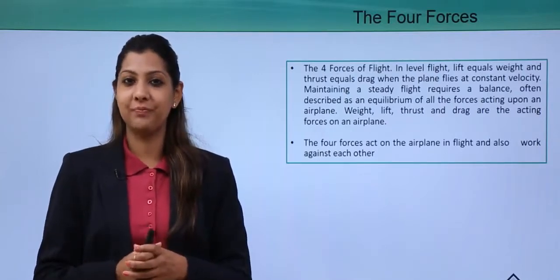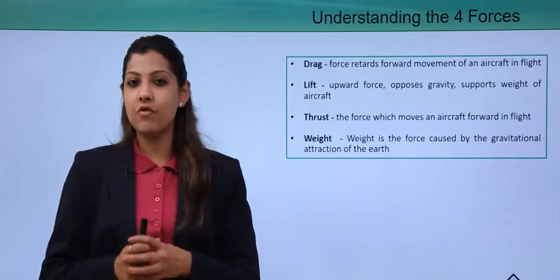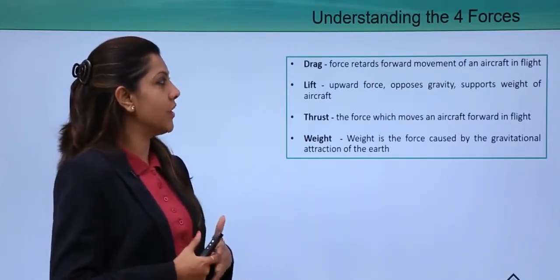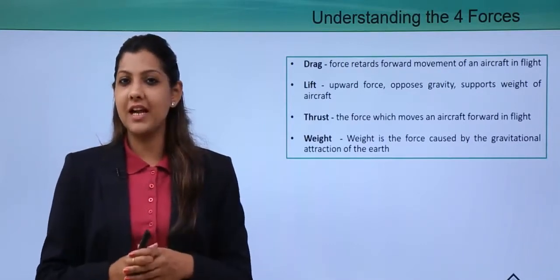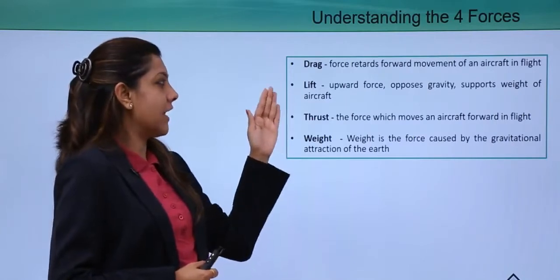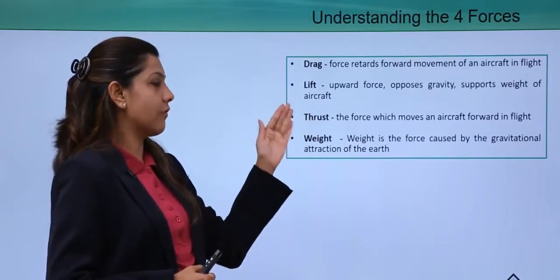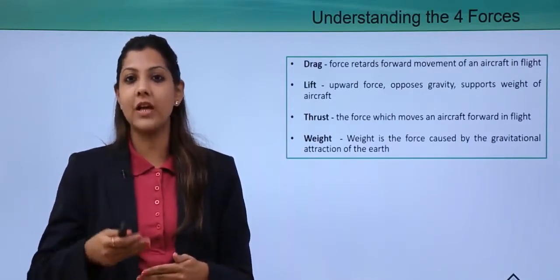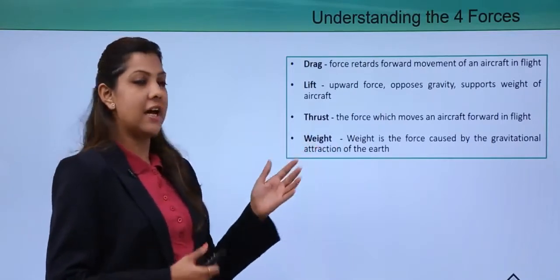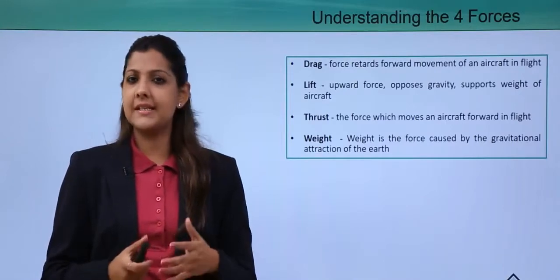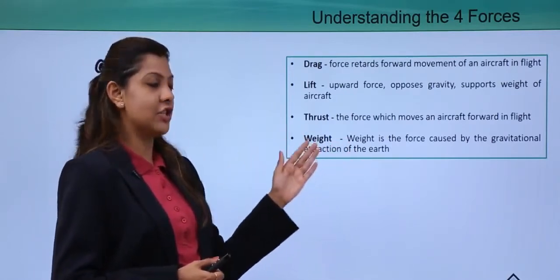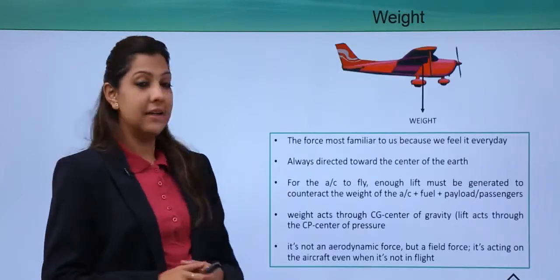Drag is a force that retards or stops the forward movement of an aircraft; thrust must overcome it. Lift is an upward force that opposes gravity and supports the weight of the aircraft, helping it lift off the ground. Thrust is the force that moves the aircraft forward. Weight is the force caused by the gravitational attraction of the earth, always acting toward the center of gravity.